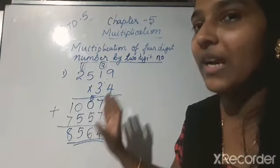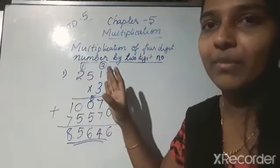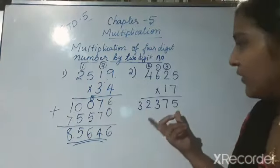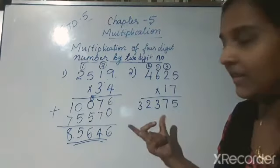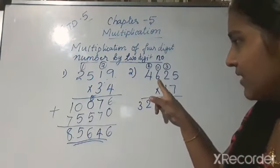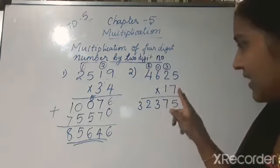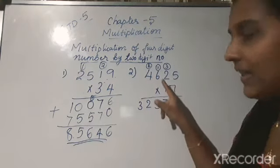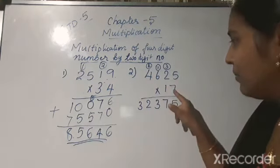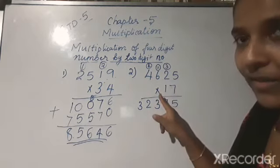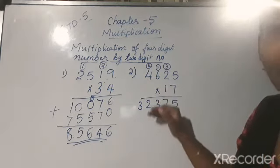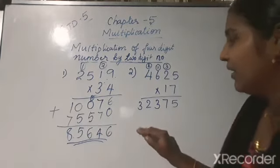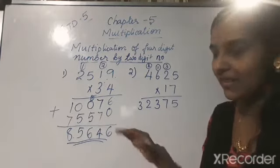This way you can multiply a 4-digit number by a 2-digit number. Now we are moving to the next question: 4,625 into 70. Here, first we have to multiply the whole number by 7, then multiply with 1, and after that add both products together to get the answer.